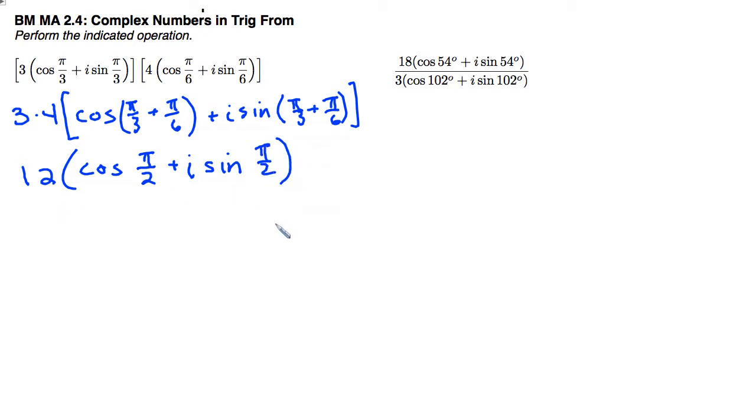And we can leave it like that in trigonometric form, or if we wanted to actually evaluate cosine of pi over 2, which is 0, sine of pi over 2, which is 1, and then distribute in the 12 to get 12i. We'd also have that as our answer.